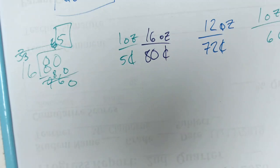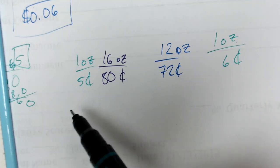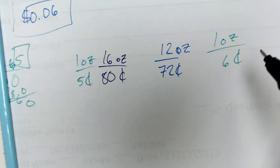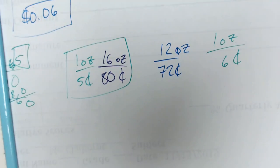So this reduces to one ounce for five cents. So over here the big can cost five cents an ounce, the small can cost six cents an ounce. Which one is the better buy? The big can is because that is cheaper.